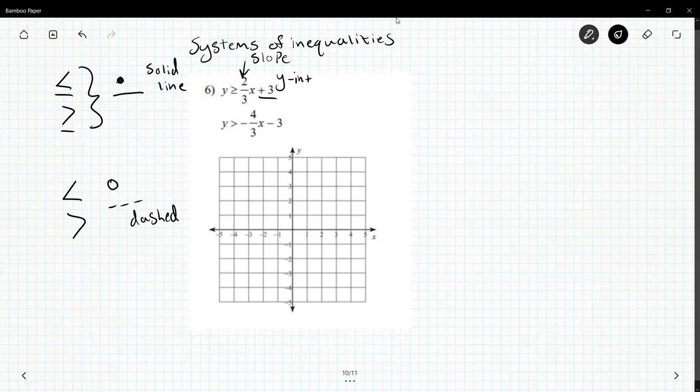So first we're going to graph our lines. y is greater than or equal to, so solid line, two-thirds x plus three. So plus three and two-thirds means up two to the right three and I'm just going to give myself another, so down two to the left three, give myself another point so my line is actually straight or as best as I can.